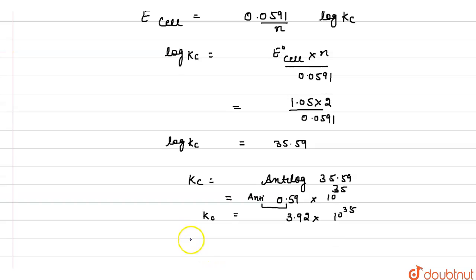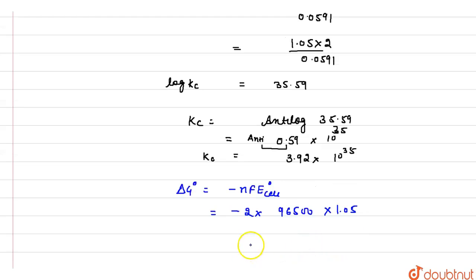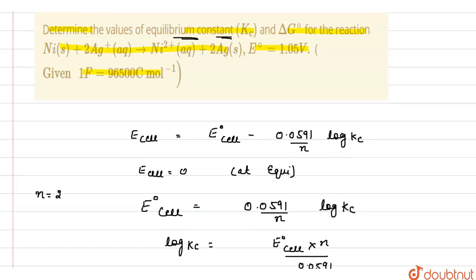We also have to find out the value of delta G. The formula is: delta G = minus nFE. The value of n is 2, Faraday is 96500, and E is the E°_cell value of 1.05. When we solve this, it comes out to be minus 202650 joules. When we convert into kilojoules, it is minus 202.65 kilojoules. This is the value of delta G.